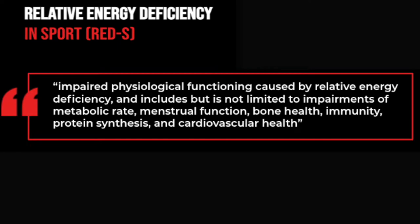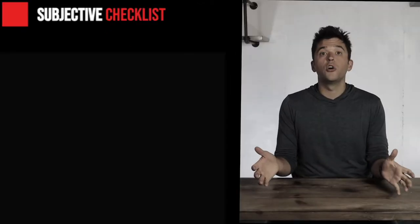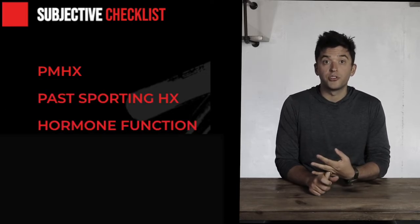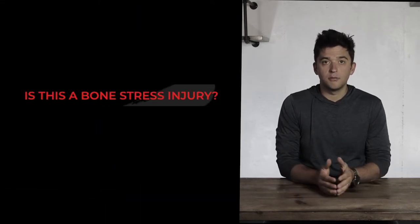Relative Energy Deficiency in Sport (RED-S) expands on the triad — impaired physiological functioning caused by relative energy deficiency, including but not limited to impairments of metabolic rate, menstrual function, bone health, immunity, protein synthesis, and cardiovascular health. When performing a subjective examination, key areas to investigate include past medical history, past sporting history, hormonal function, nutritional status, training history, and general well-being.